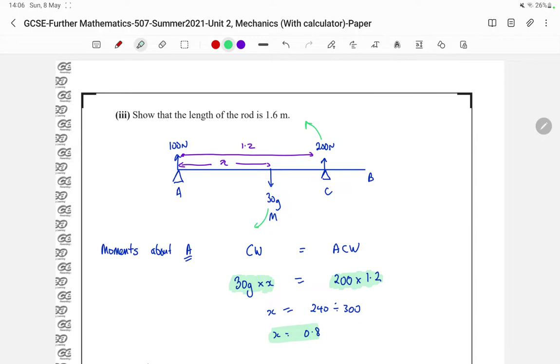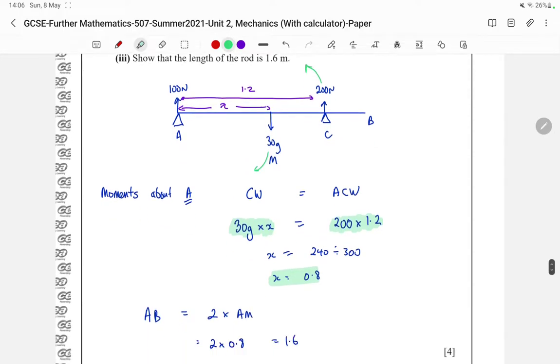Now remember that 0.8 is just the midpoint, it's half the length of the rod. We're asked to find the length of the rod, or at least show it's 1.6. So 2 times 0.8 is 1.6.